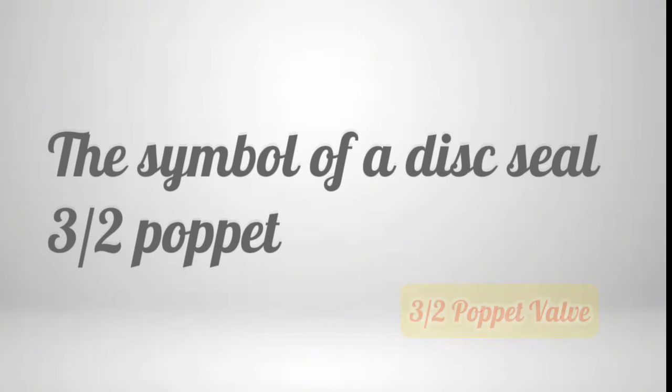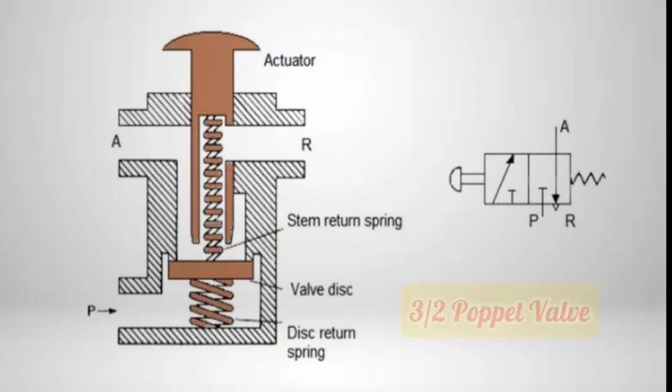The symbol of a disc seal 3-way poppet. With the push button released, ports A and R are first sealed. Then the valve disc pushes downwards to open the valve and connect ports P and A.